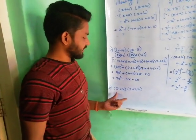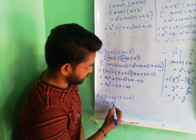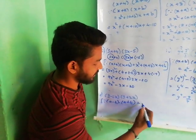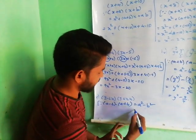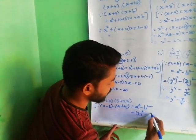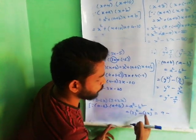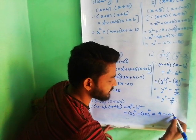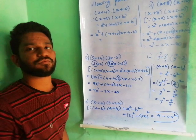Fifth one: 3 minus 2x, 3 plus 2x. This looks like a minus b into a plus b. a minus b into a plus b is equal to a square minus b square. Here a value is 3, so 3 whole square, minus b value 2x, 2x whole square. 3 square means 9. 2x whole square means 2 square into x square, and 2 square is 4. So 4x square. Final answer: 9 minus 4x square.